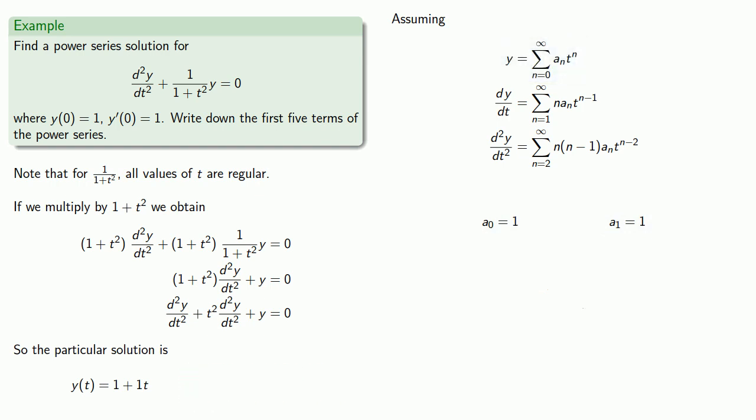Our recurrence relationship tells us how to compute an plus 2 from an. So if I want to find a2, well that'll be when n is equal to 0. So substituting in n equals 0, finding our values, a2 is minus 1 half, which gives us the next term of our series.